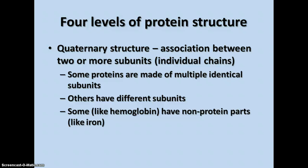The fourth level of structure is called the quaternary structure, and it is an association between two or more subunits — two or more individual chains folded and fit together in various ways. Some proteins are made of multiple identical subunits, and others have subunits that are very different from each other. There are some proteins, like hemoglobin, that have non-protein parts, like the iron present in hemoglobin. There are many different combinations across the thousands of different kinds of proteins found in your cells.